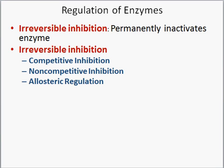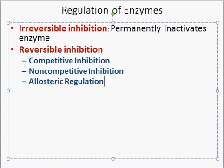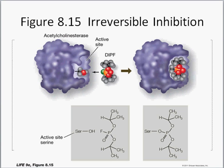Enzymes are important and highly regulated because there are lots of chemical reactions going on inside our cells. You don't want certain reactions running when they shouldn't, or enzymes interfering with each other. There are two main types of regulation: irreversible inhibition, which permanently inactivates an enzyme, and reversible inhibition, which inhibits enzymes temporarily.